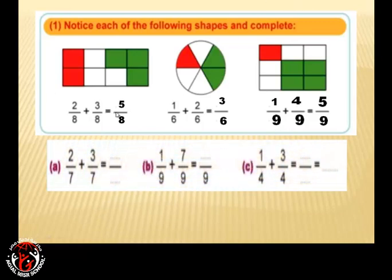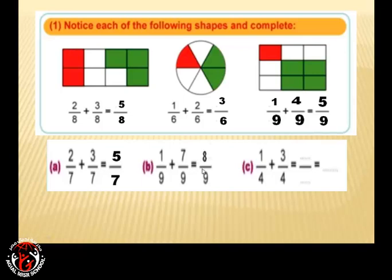Second question: 2 over 7 plus 3 over 7 equals 5 over 7. Next: 1 over 9 plus 7 over 9 — the denominator stays 9, and 1 plus 7 equals 8, so the answer is 8 over 9. Last example: 1 quarter plus 3 quarters — 1 plus 3 equals 4, the same denominator is 4, so 4 over 4 equals 1.